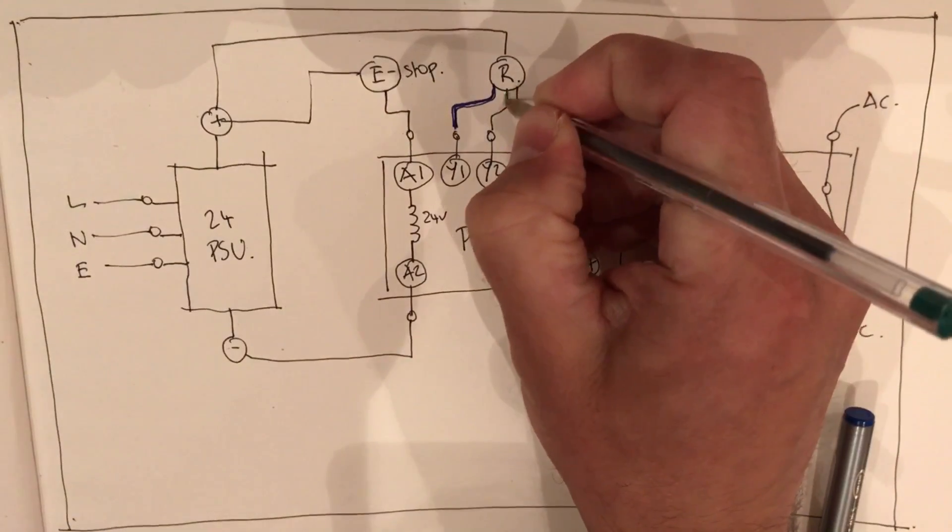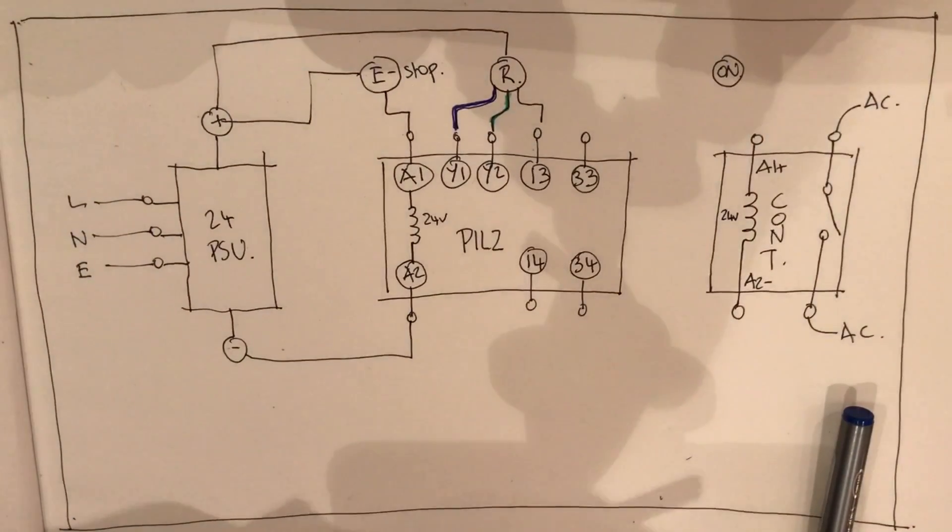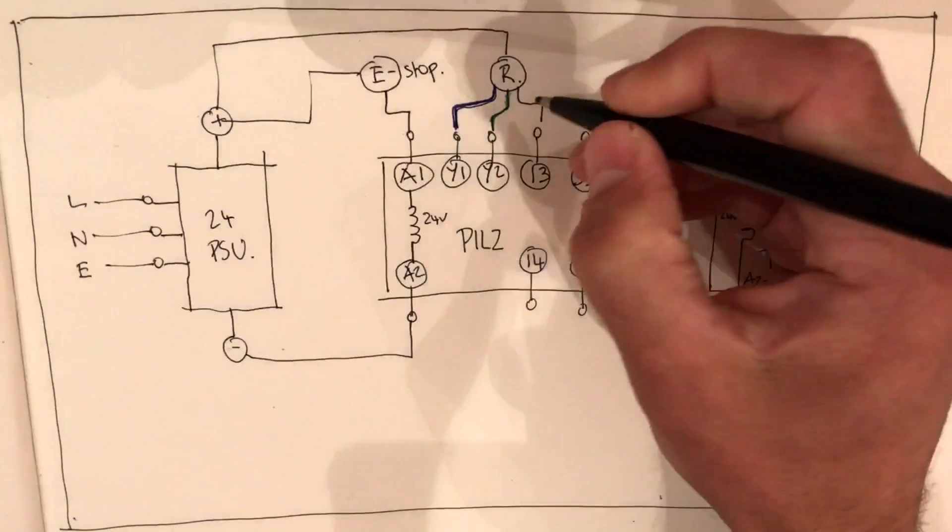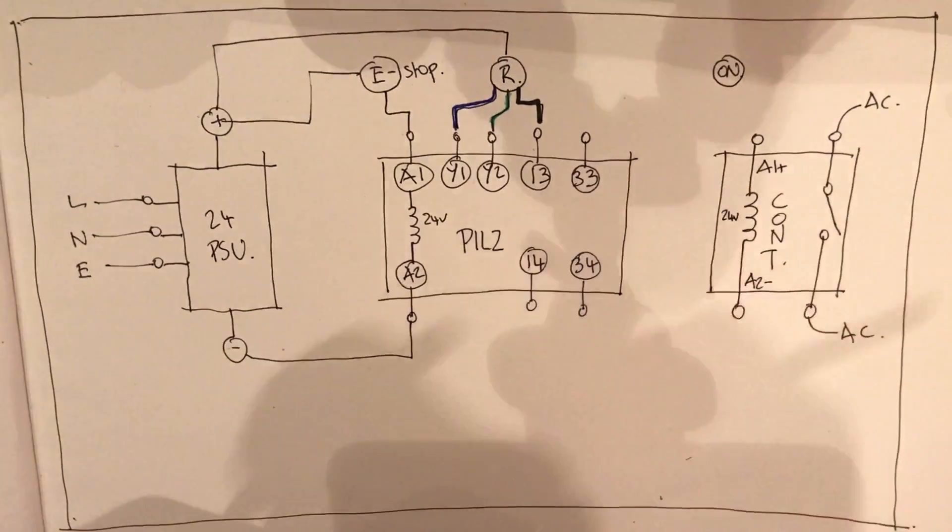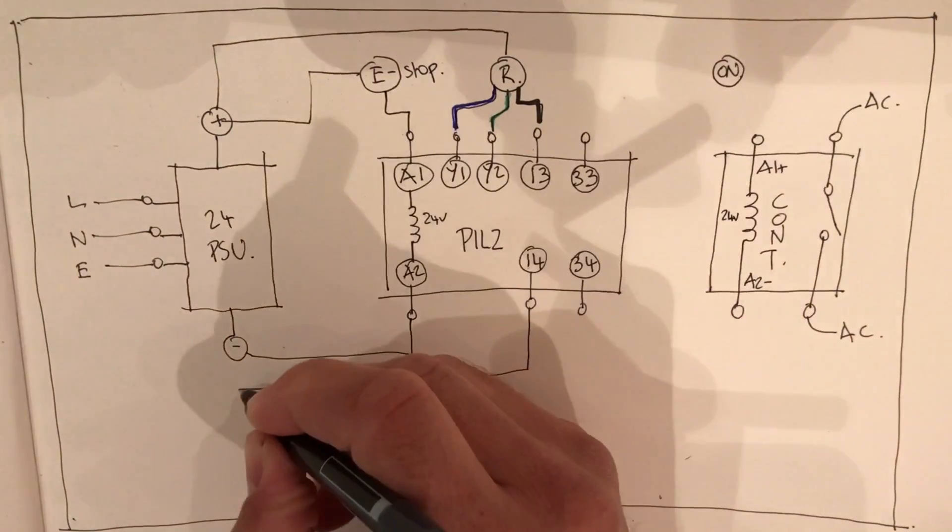Green, green and black. Then out of 14 we go back to the negative.